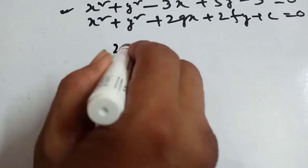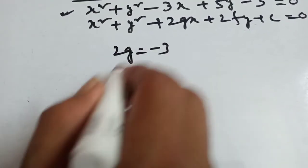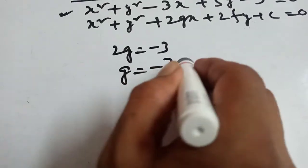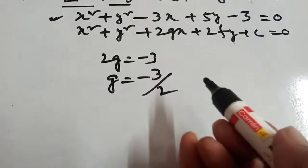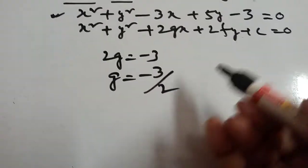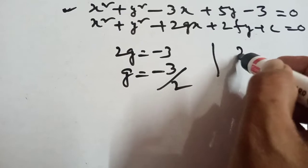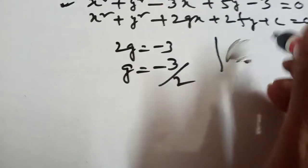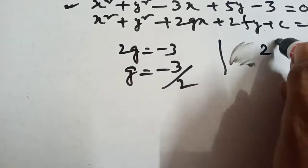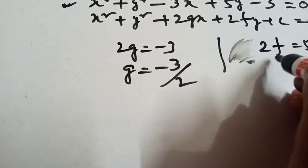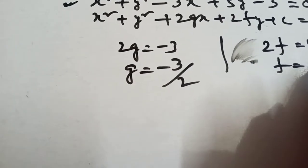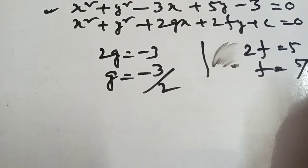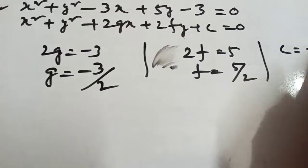Now, 2g = −3, that means g = −3/2. Again, 2f = 5, so f = 5/2. And c = −3.